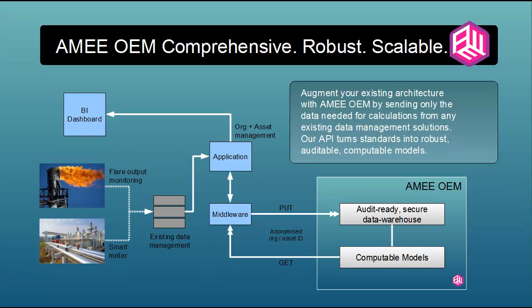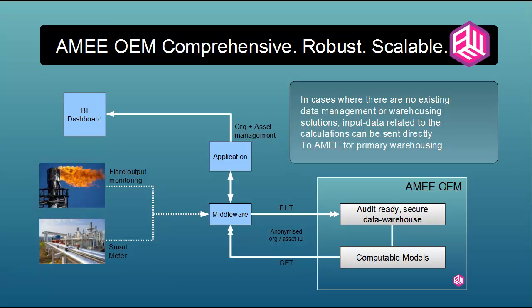Most organisations and most applications already have data warehousing solutions, and AIME's role is not to supplant them, but to provide a mechanism to aggregate data specifically related to calculations. However, for instances where no data warehouse exists, or systems that are not easily integrated or scalable, a growing number of AIME partners have discovered that the AIME platform can act as their primary data warehouse for consumption and activity data. We understand that security and scale are core requirements for our OEM partners.